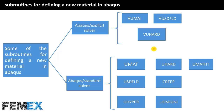Abaqus has many subroutines for defining a new material. For example, by using UHARD or VUHARD you can define a new plasticity model for ductile materials. By using the CREEP subroutine you can define a new creep model. By using the UHYPER subroutine you can define a new model for a hyperelastic material. And by using the UDMGENIE subroutine you can define a new damage initiation criterion for the XFEM technique in fracture mechanics.